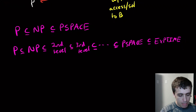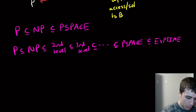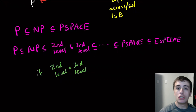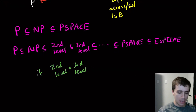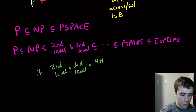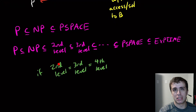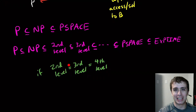Another possibility is that there's only a finite number of levels. Suppose the second level is equal to the third level. Then if we raise to another power of NP, we can show that this is equal to the fourth level, because getting an oracle to an NP machine doesn't get us more power. So the third is equivalent to the second, and taking another power for four levels, we don't escape this equality.